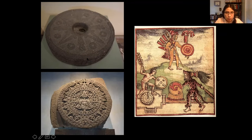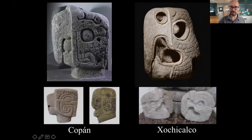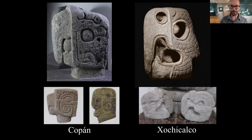We also have iconographic parallels with the famous Aztec sun stone, or calendar stone, where the sun is coming out of the underworld. Andrew, I think it's time for you. So I'm going to talk a little about what the ball court itself represents as a piece of civic architecture and what it symbolically represents in the Mesoamerican cosmos.